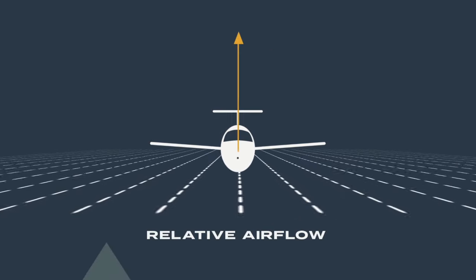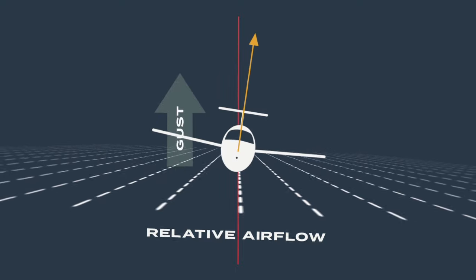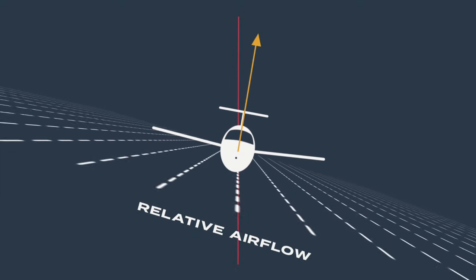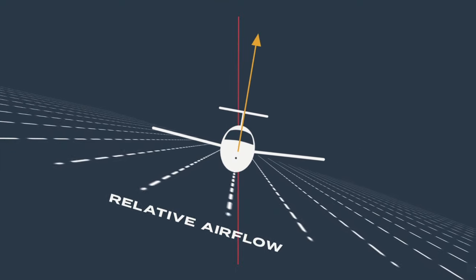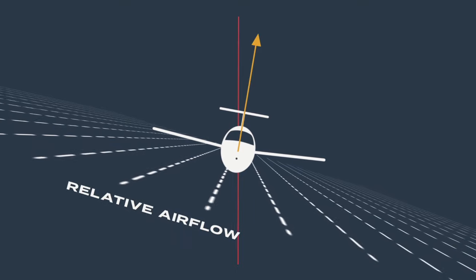Lift acts perpendicular to the relative airflow. If the aeroplane rolls to the side when disturbed by a gust of wind, the lift vector leans to the side with the aeroplane.